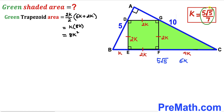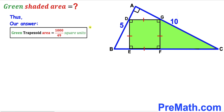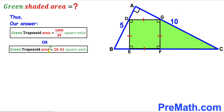Substituting k = 5√5 / 7, we get Area = 8 × (5√5 / 7)² = 8 × 125 / 49 = 1000/49 square units. The area of the green shaded trapezoid is 1000/49 ≈ 20.41 square units. Thanks for watching, and please don't forget to subscribe for more exciting videos.